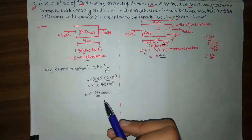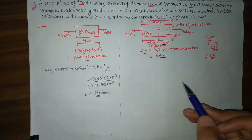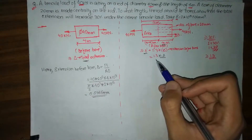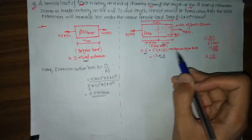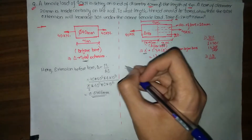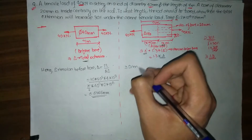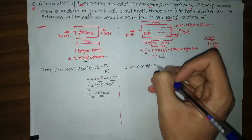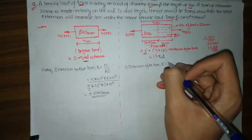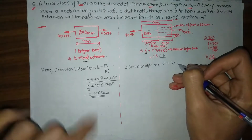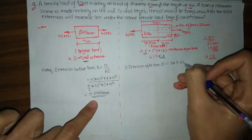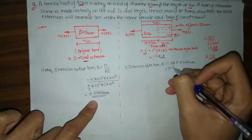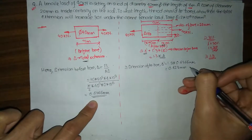According to our question, the extension after boring must be 1.3 times the extension before boring. So the extension after bore, which I have denoted as del dash, will simply equal 1.3 times the initial extension before boring, which is 0.6366 mm. This gives us del dash equals 0.828 mm.